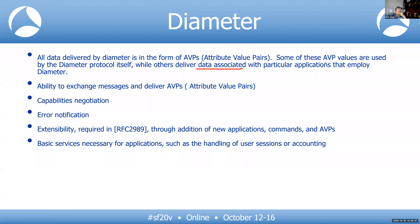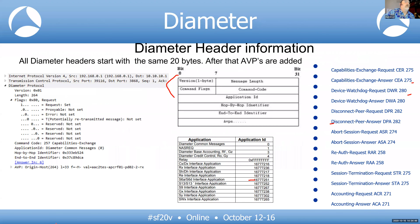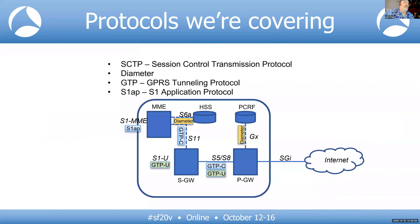In response to the question about whether Diameter is only with the MME — no. Diameter is used between the MME and HSS, and from the P-Gateway to the PCRF, to the Triple-A server, to the OCS, and so on. The GTP-C protocol handles connections from the MME to the S-Gateway and P-Gateway.